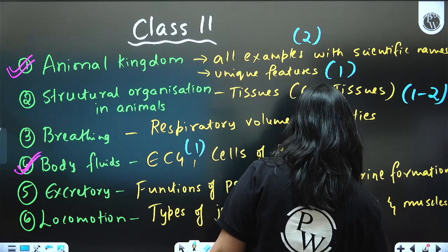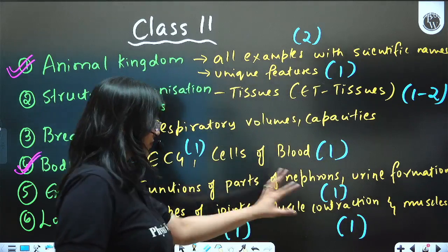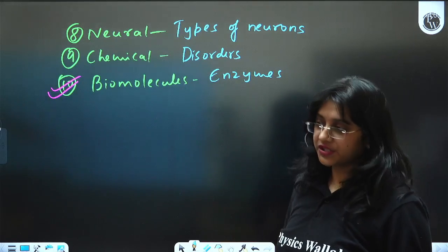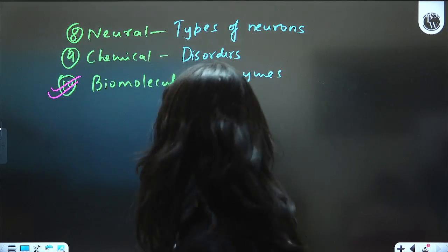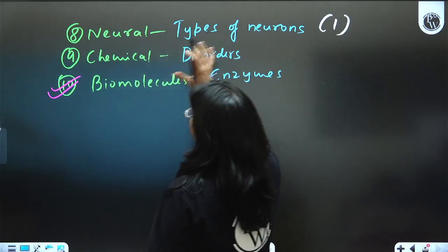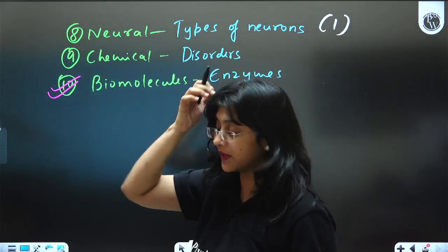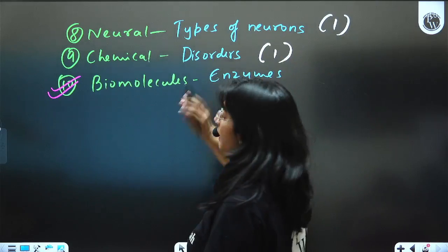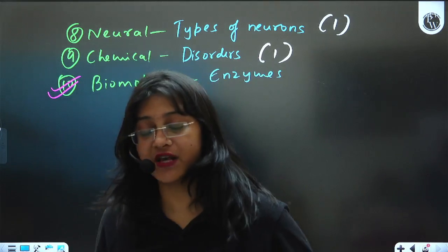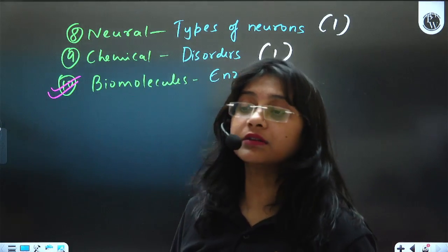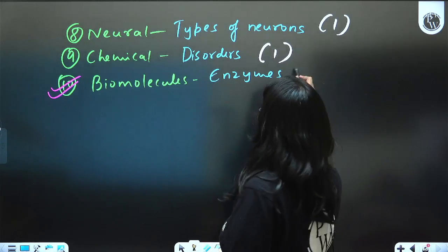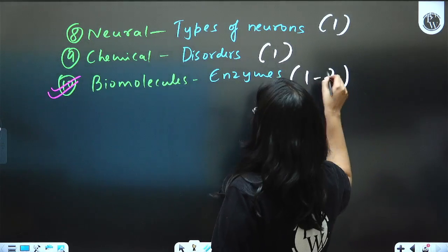From Locomotion and Movement, every year questions are asked from types of joints. You should also know muscle contraction and skeletal muscle — combined, one question will be asked. From Neural Control and Coordination, every year questions are asked from types of nerves and neurons. From Chemical Coordination and Integration, at least one question will be asked from disorders. Biomolecules is also a very important, high-weighted chapter — from enzymes, for sure one to two questions will be asked.